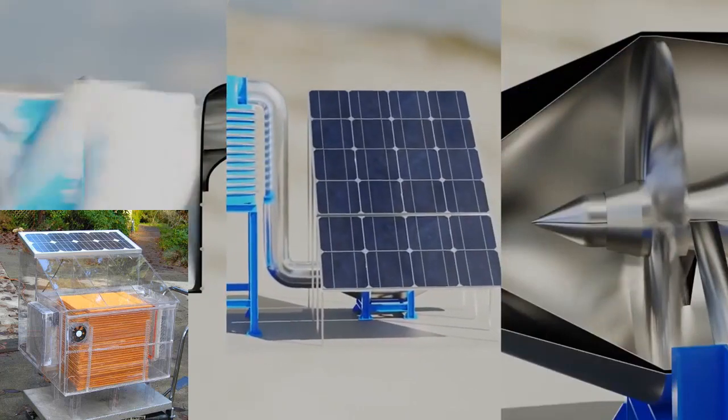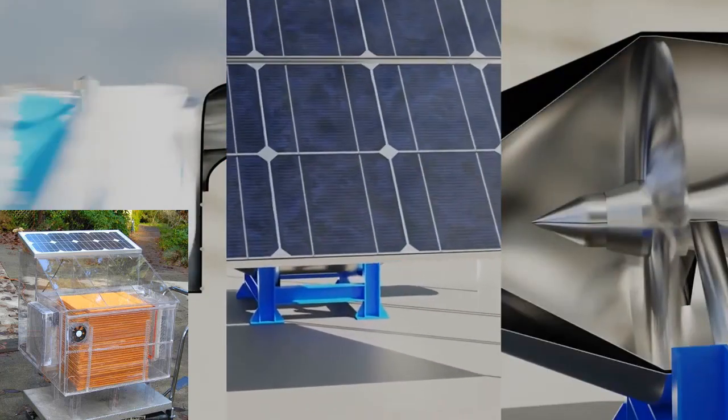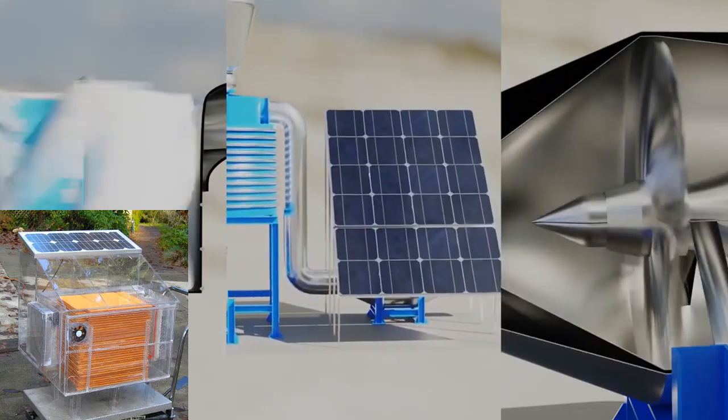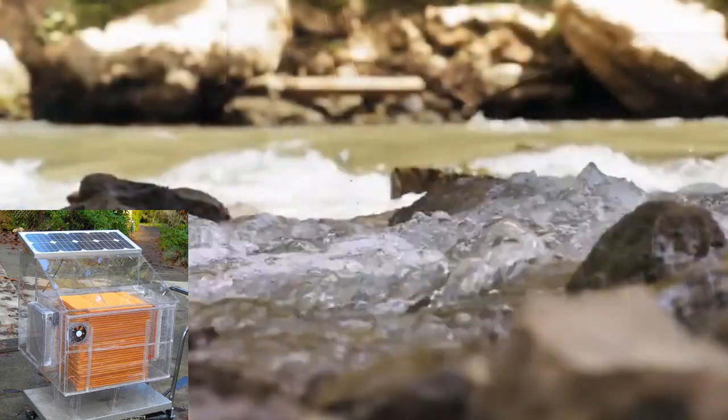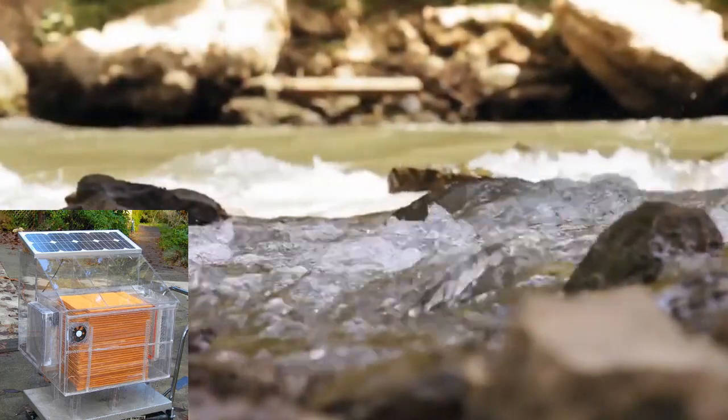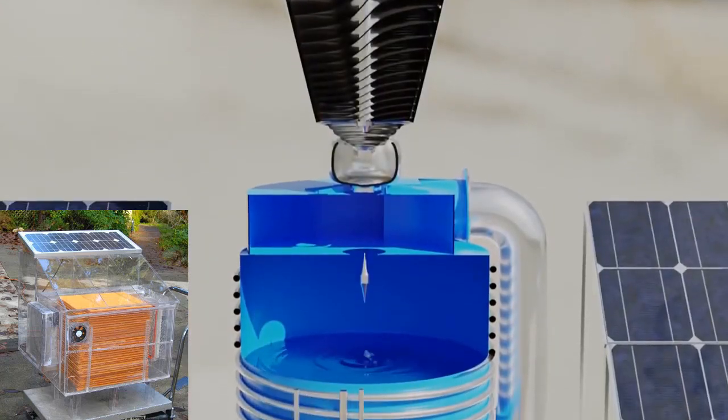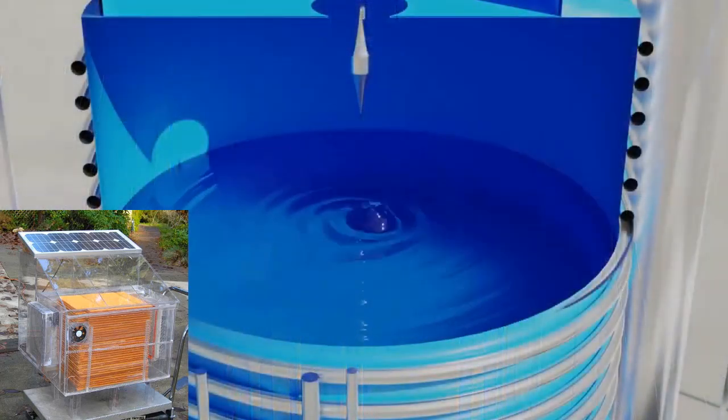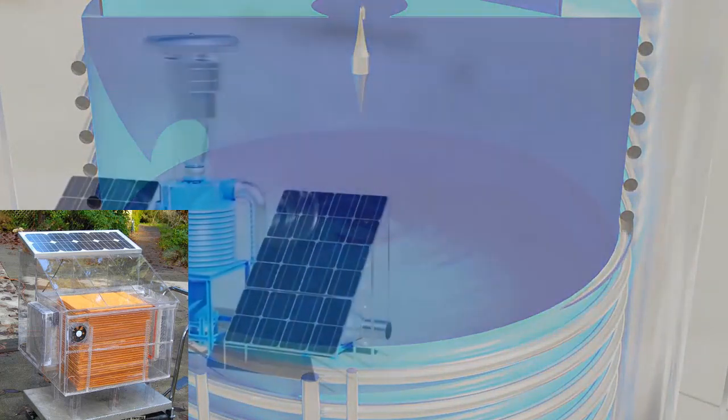The power consumption of atmospheric water generators varies depending on the technology employed. While air conditioner-based AWGs demand significant power, utilizing water condensation technology with propellers enables power-efficient operation, particularly when combined with solar energy. The rain-making ether technology represents yet another fascinating avenue for generating clean water. As we continue to explore and refine these technologies, the goal of providing accessible and sustainable water solutions becomes increasingly attainable.